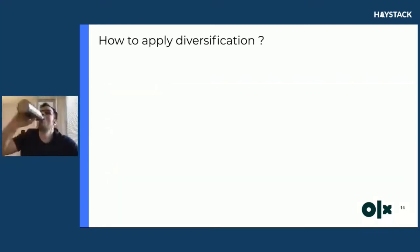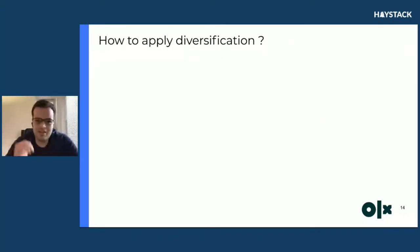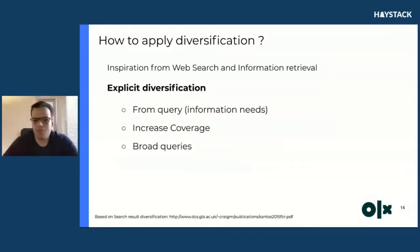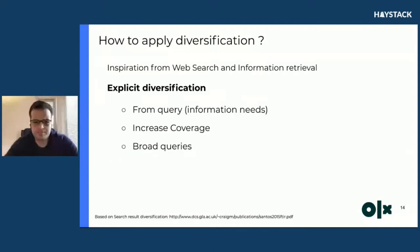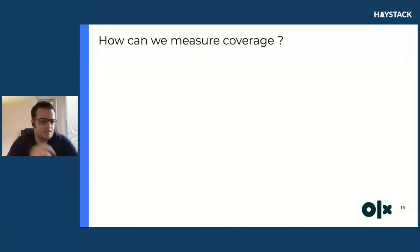How to apply diversification? My goal is not to fully answer this question, but to share some research and techniques I used in this use case. Inspired by web search information retrieval, there's a nice paper from Professor Santos on explicit diversification in web search. It happens when a query — also known as an information need — has multiple interpretations, and you explicitly diversify to increase coverage, covering as many interpretations of that meaning as possible. This is very good for broad queries. But the next question is: how can we measure coverage?